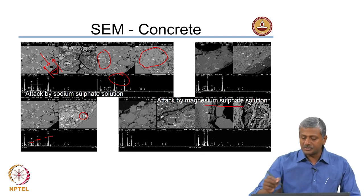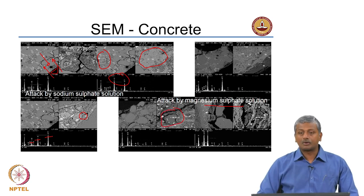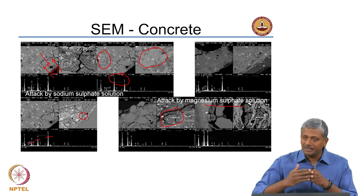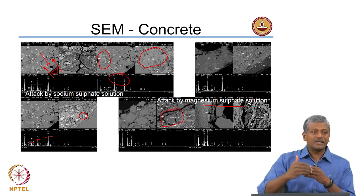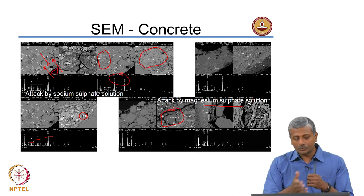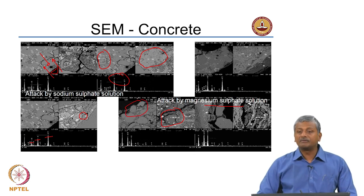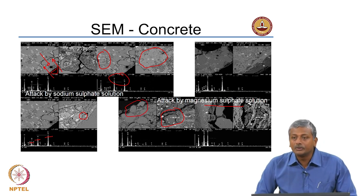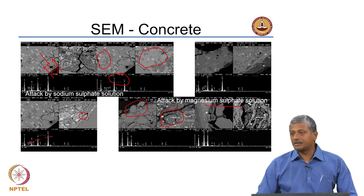In the case of magnesium sulphate, you often form a non-cementitious phase called magnesium silicate hydrate. This happens because your calcium silicate hydrate progressively decalcifies — the calcium keeps going out and gets slowly replaced by magnesium. Near the surface, there is a lot of deterioration where the CSH has been completely converted to magnesium silicate hydrate.